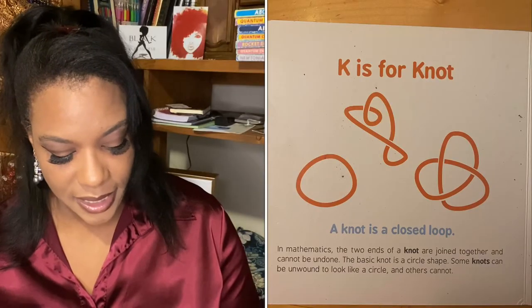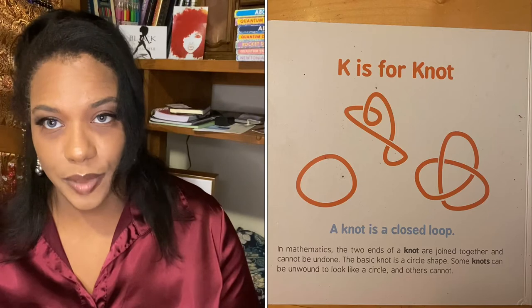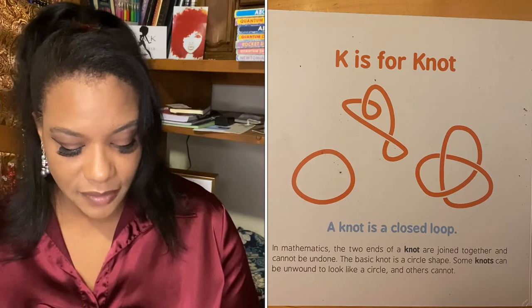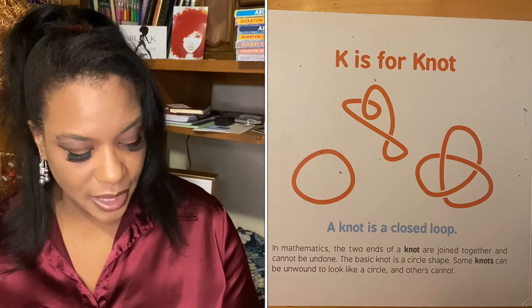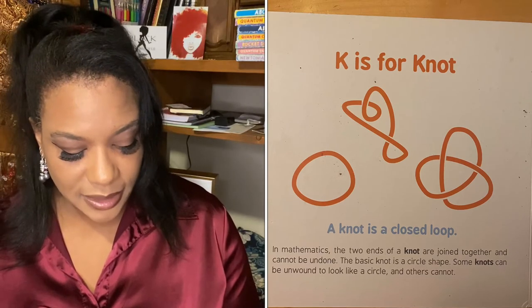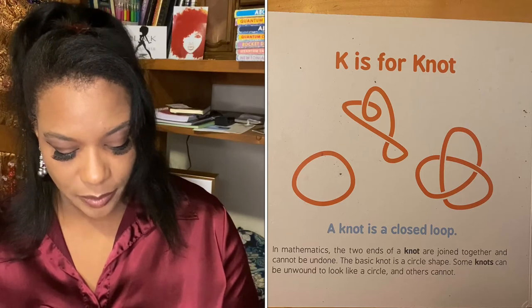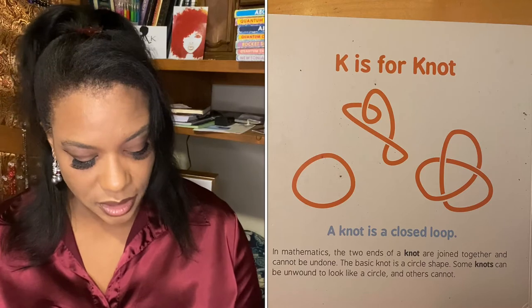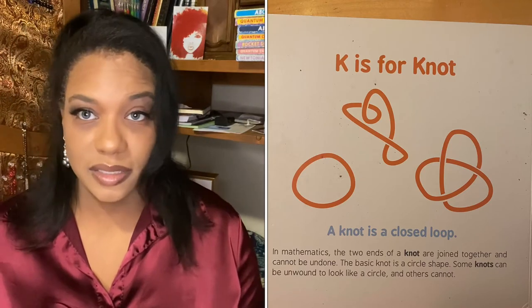K is for knot. A knot is a closed loop. In mathematics, the two ends of a knot are joined together and cannot be undone. The basic knot is a circle shape. Some knots can be unwound to look like a circle, and others cannot.